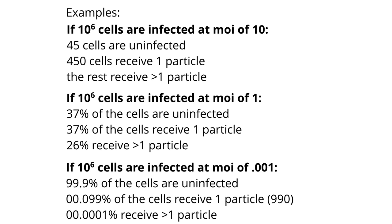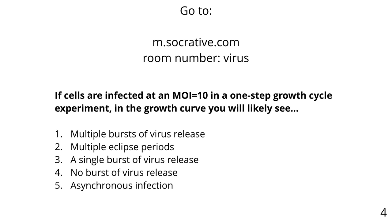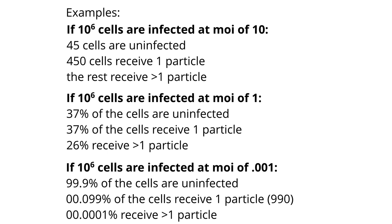Quiz question: if cells are infected at an MOI of 10 in a one-step growth cycle experiment, what will you see? The answer is C — a single burst of virus release. At MOI of 10, only 45 cells out of a million are uninfected; the rest all proceed through the infectious cycle together and release virus at once. Those 45 uninfected cells would never produce a visible second burst in the curve.